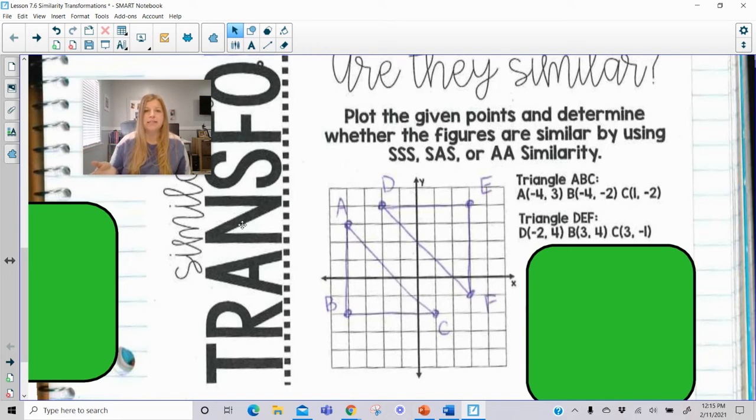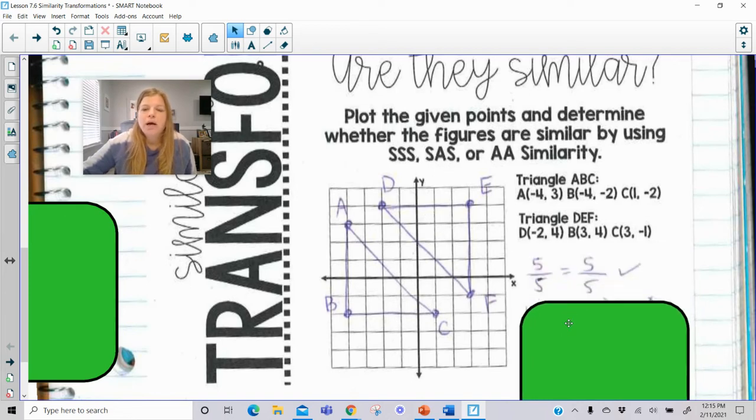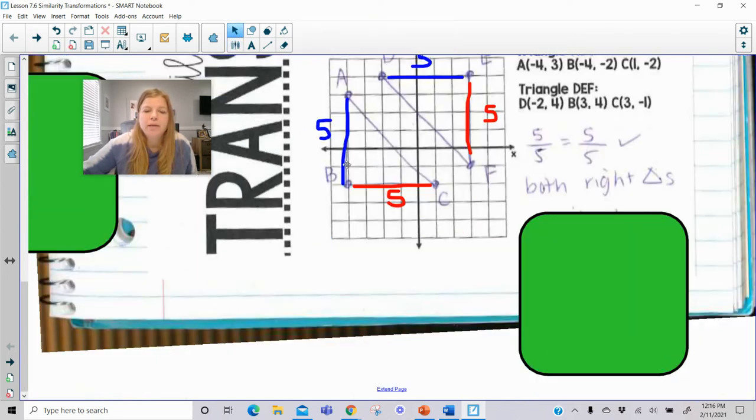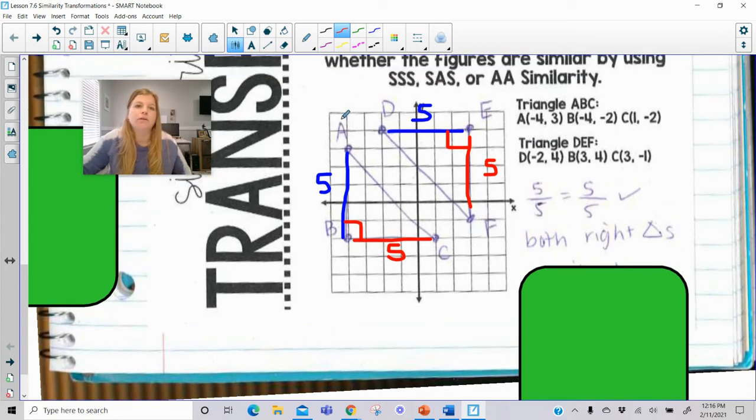Probably side, side, side, and side angle side are the easiest ways to go. I definitely can see here that I've got two sets of proportional sides. This has a length of 5, and this has a length of 5. And then the other side is also a length of 5 to 5. And I do see that these segments A, B, and B, C are perpendicular to each other. Slope of 0, slope of an undefined slope. So I know that they are both right triangles. And we know that if they're both right triangles, that means they both have right angles, and right angles are congruent to each other.